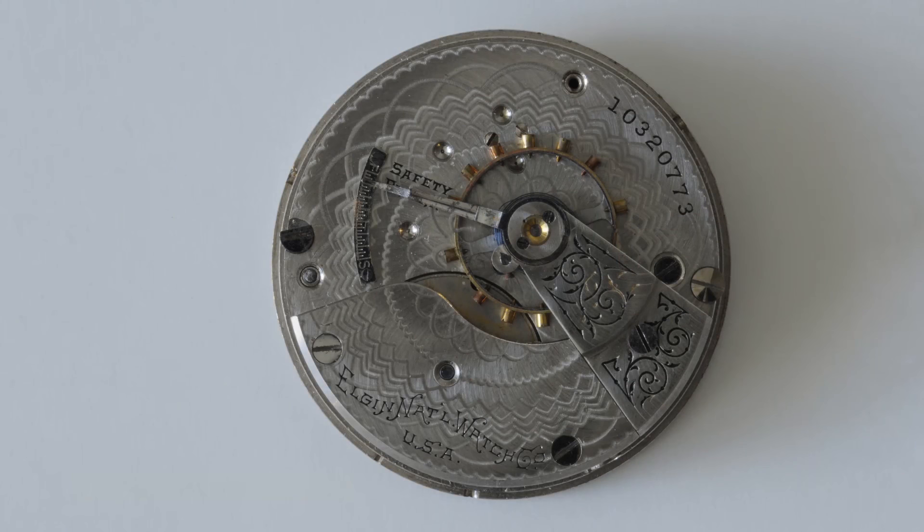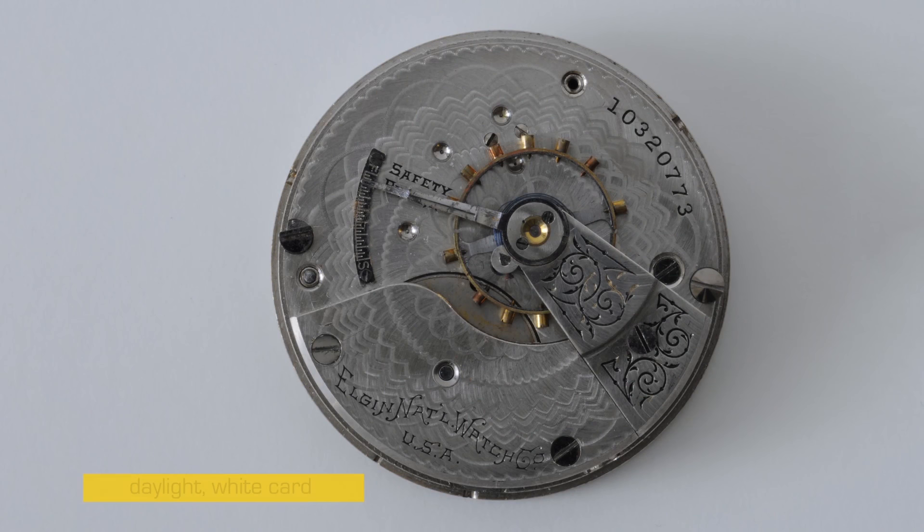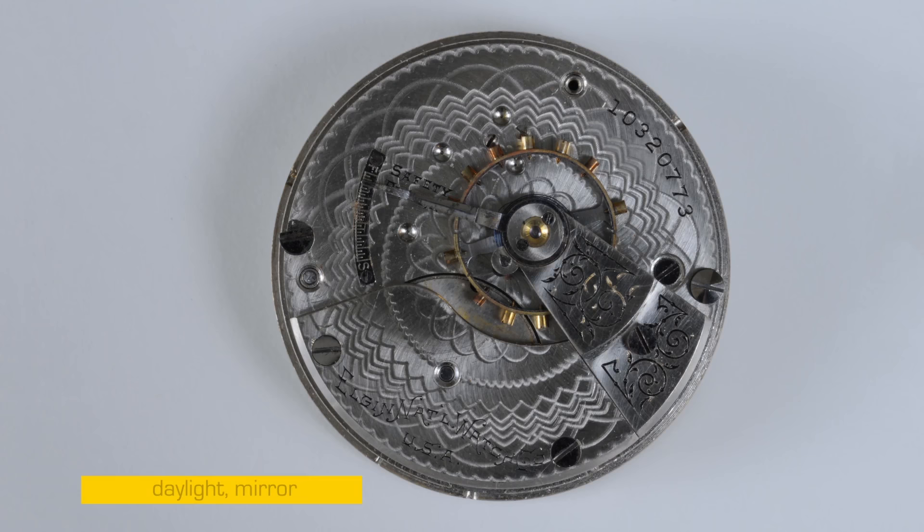So here's an image of the inside of the watch that we've seen before just with daylight on an overcast day. Here I added a white card on the side of the watch for a fill. Here is a mirror reflecting the daylight again as a fill onto the watch.